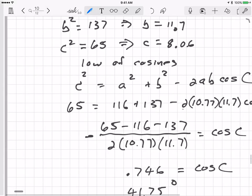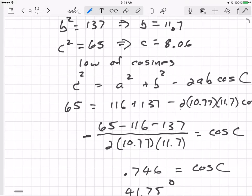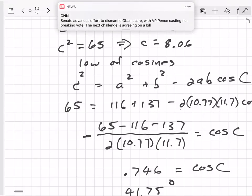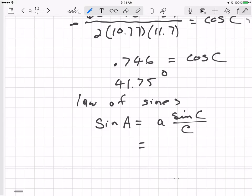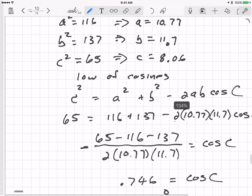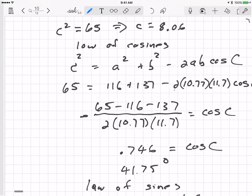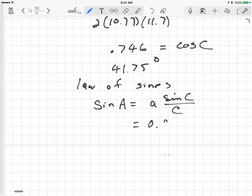Now that seems better. I don't think I got that answer before. Sine is 0.6658 multiplied by A. A is 10.77. So 10.77 multiply and divide by C. So C is 8.06, divide by 8.06. That gives me 0.88977. So that should be sine A, 0.88977.